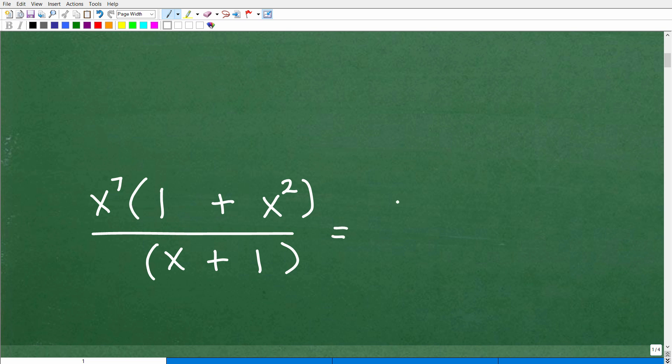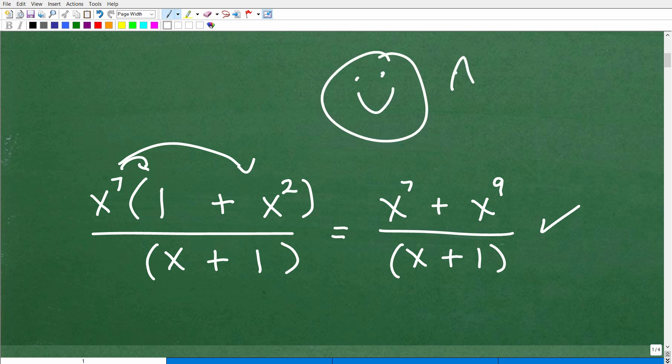Now, if you have this version, you could have had x to the 7th plus x to the 9th over x plus 1. Basically, what happened there is you just distributed that x to the 7th back in. And this is definitely acceptable as well. But either answer will work. And if you did this correctly, if you got one answer or the other, let me go ahead and give you a nice little happy face and A plus, a 100% and a few stars to celebrate your success in algebra today. Nice job.